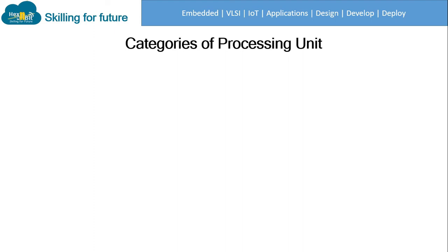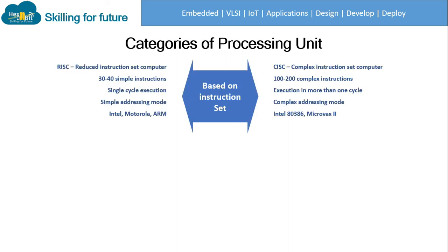Next are categories of processing units. Based on instruction set, there are two types. RISC stands for Reduced Instruction Set Computer — these have 30 to 40 simple instructions executable in a single cycle, with simple addressing modes; examples include Intel, Motorola, and ARM. CISC stands for Complex Instruction Set Computer — these have 100 to 200 complex instructions, each executable in more than one cycle, with complex addressing modes; examples include Intel 80386 and MicroVAX 2.